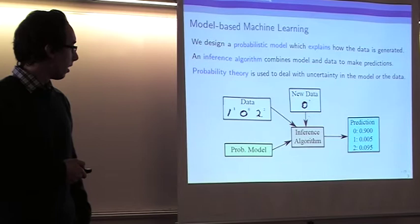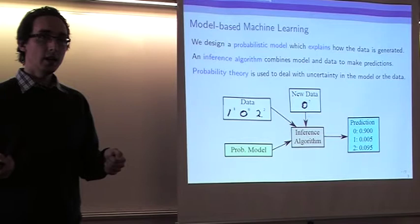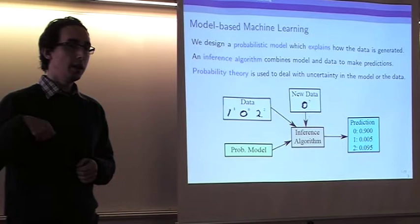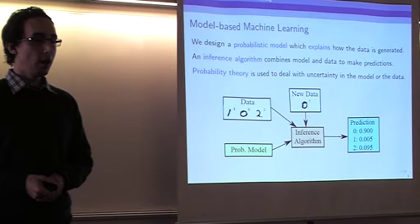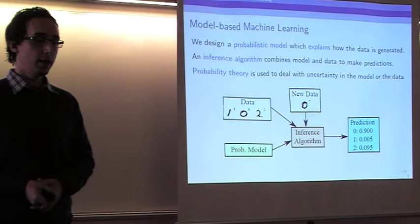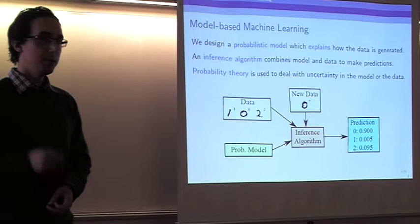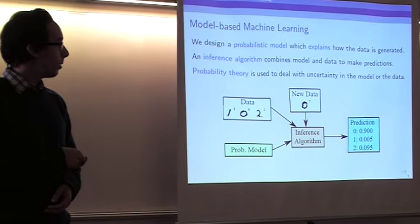Uncertainty can also be present in the model. The probabilistic model may make use of some latent variables or latent parameters used to explain how the data is generated, but whose values we don't know. We will use probability theory to represent our uncertainty on the value of those parameters and handle that uncertainty in a principled way. Finally, instead of making a deterministic prediction for a single outcome, we can consider all the possible predictions and weight each one by its corresponding probability.